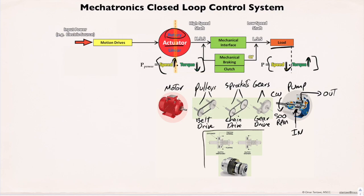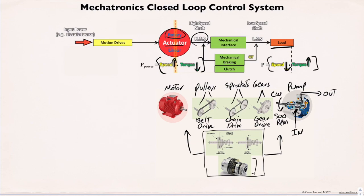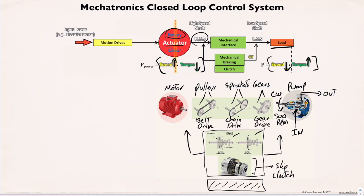A mechanical clutch is used as a protection device in case of an overload and can be placed on either side — the pump shaft or the motor shaft — commonly on the high-speed shaft. The device shown is called a slip clutch, and there are two methods of operation: engagement and disengagement. A mechanical brake is used for safety, either as a separate device or a built-in mechanism to lock the pump in position from reversing.